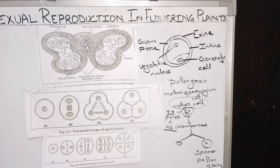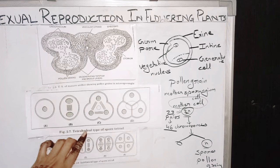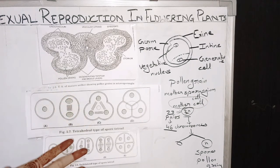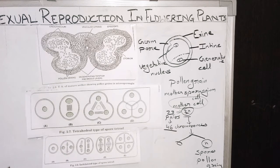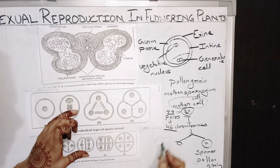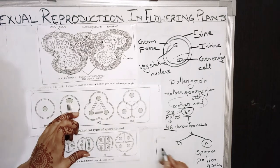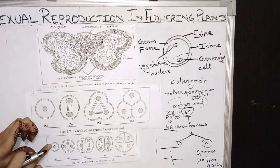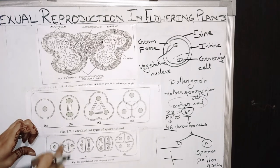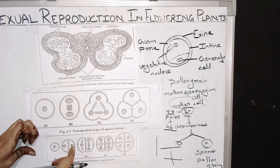In different flowering plants the arrangement is different. Tetra means four — meaning there is formation of four spores, but the arrangement differs plane-wise. For example, what is plane? Plane is the longitudinal plane or horizontal plane. If we look at this arrangement, all the cells are present in one plane — this is one plane and this is another plane.